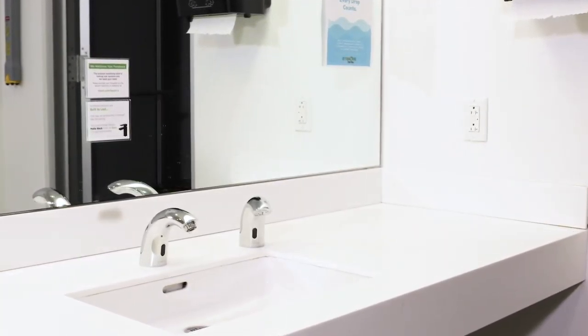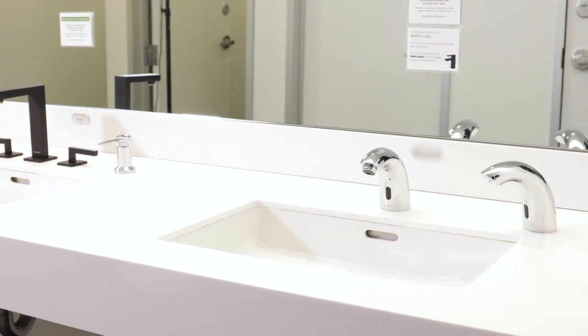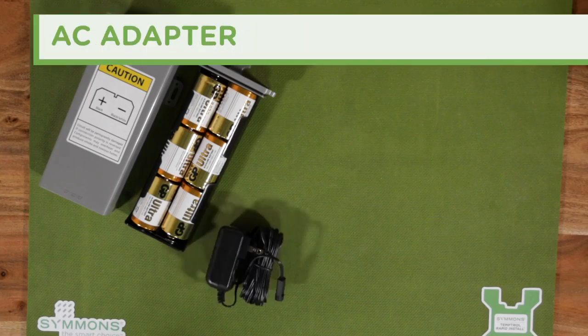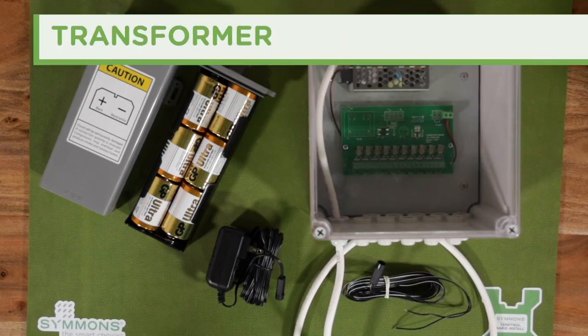From small individual powder rooms to large commercial washrooms, the Origins soap dispenser works anywhere and has the flexibility to be powered by battery, AC adapter, or transformer for multiple installations.